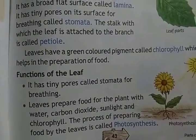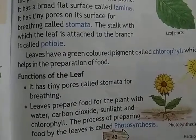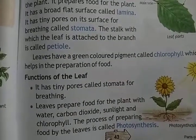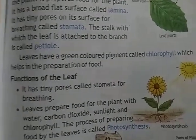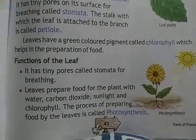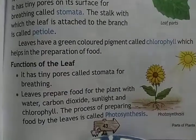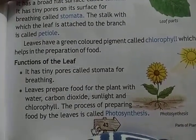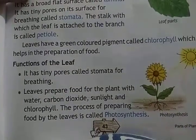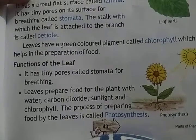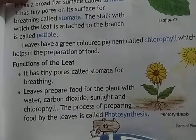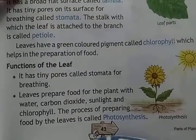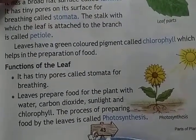These small pores are called stomata. The leaves prepare food for the plant with water, carbon dioxide, sunlight, and chlorophyll. The process of preparing food by the leaves is called photosynthesis.